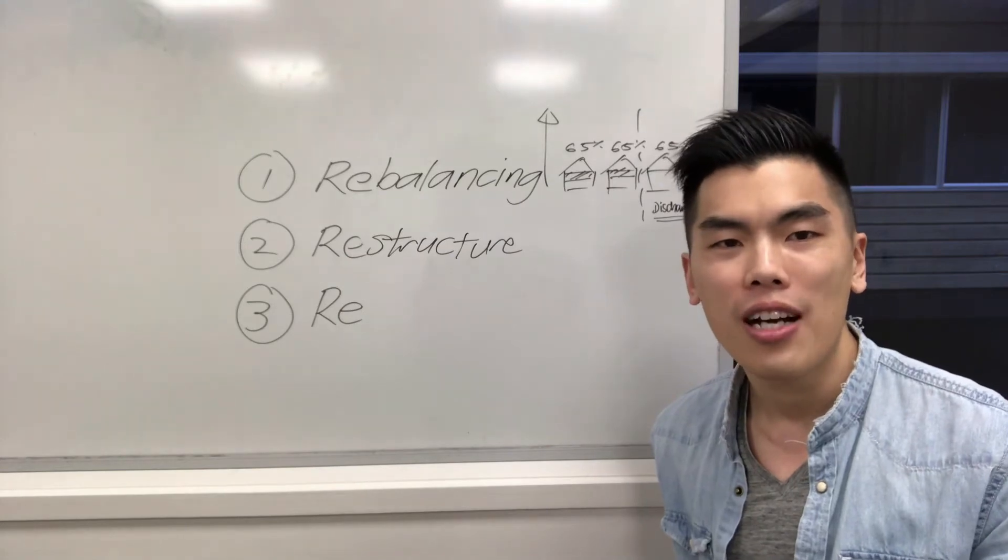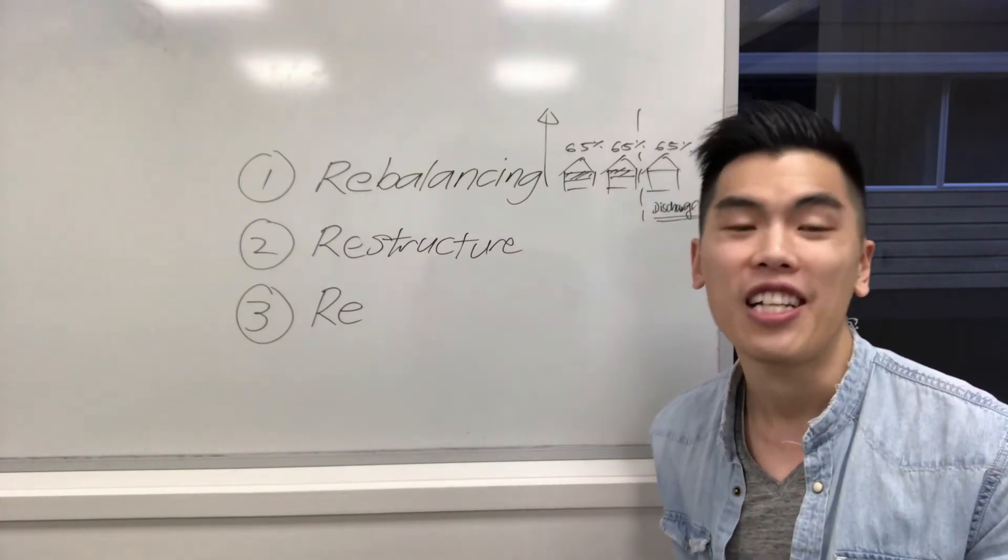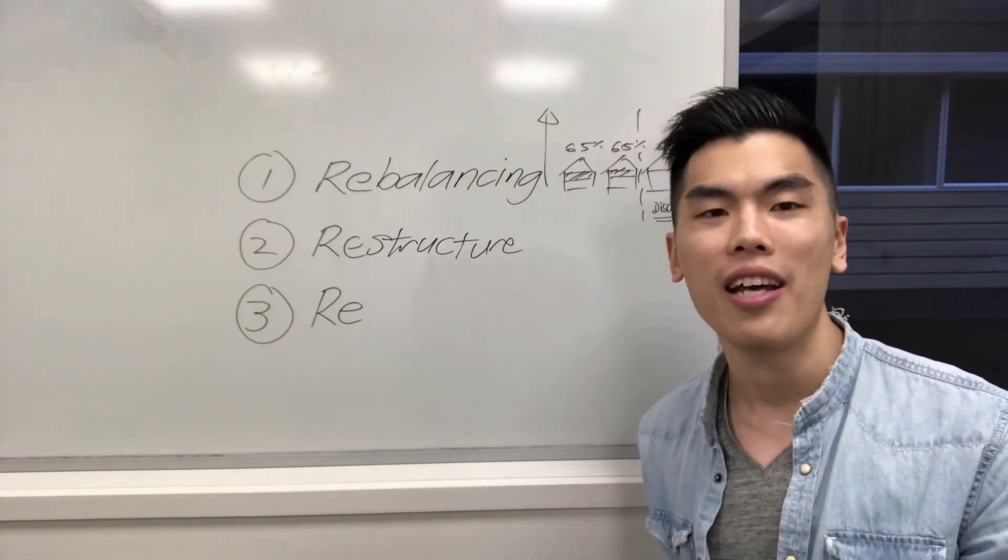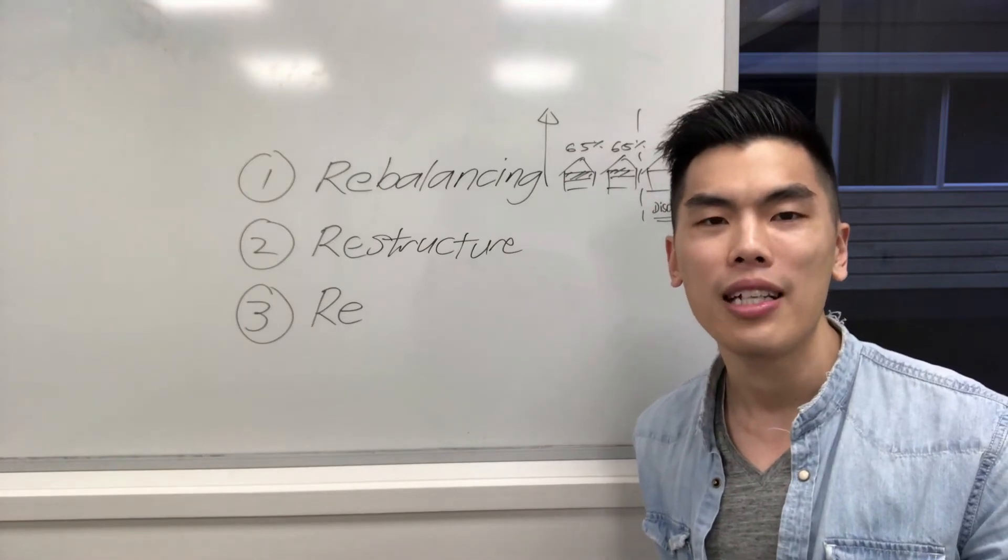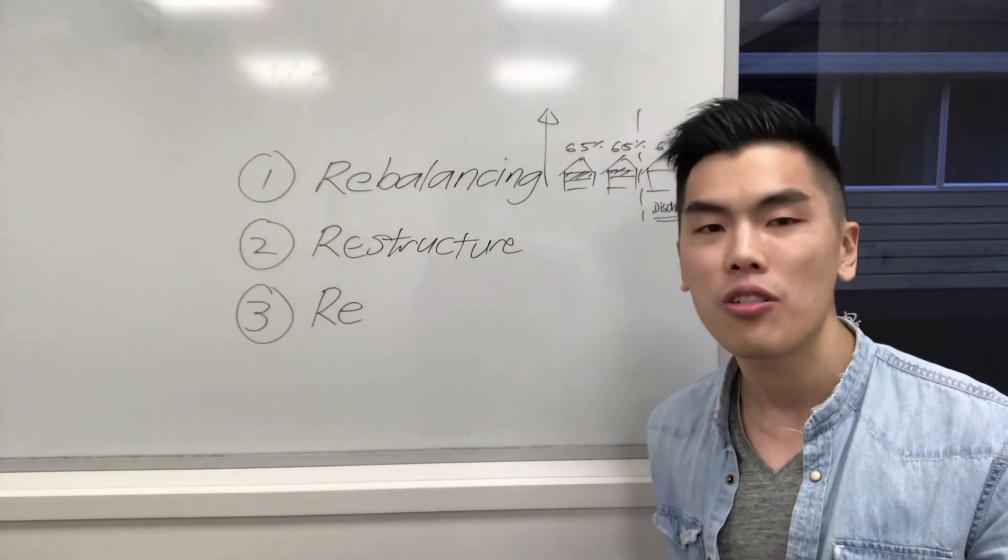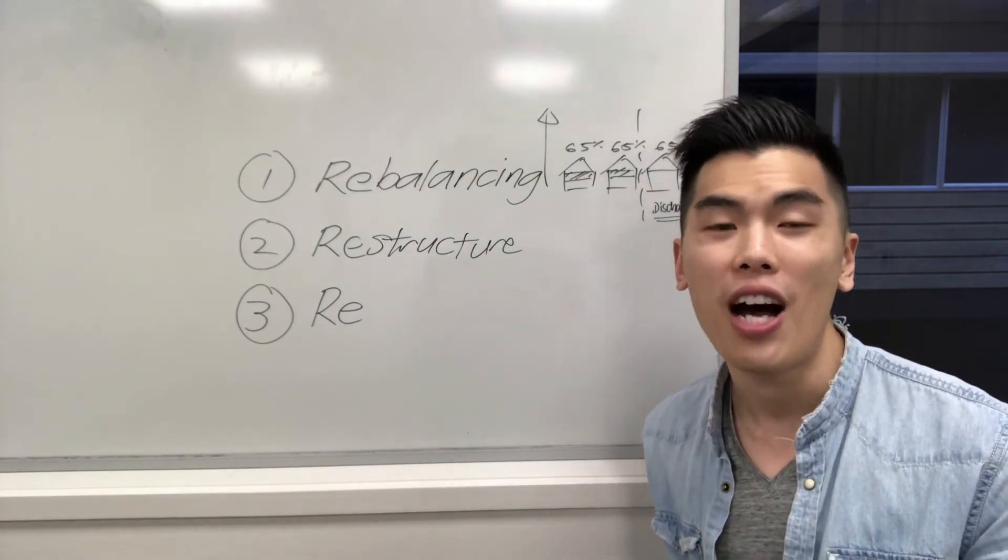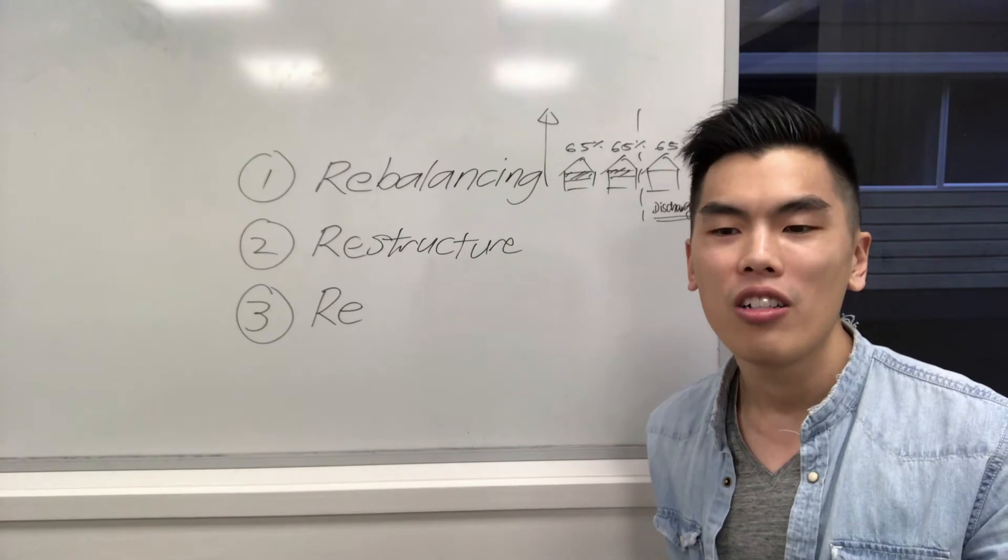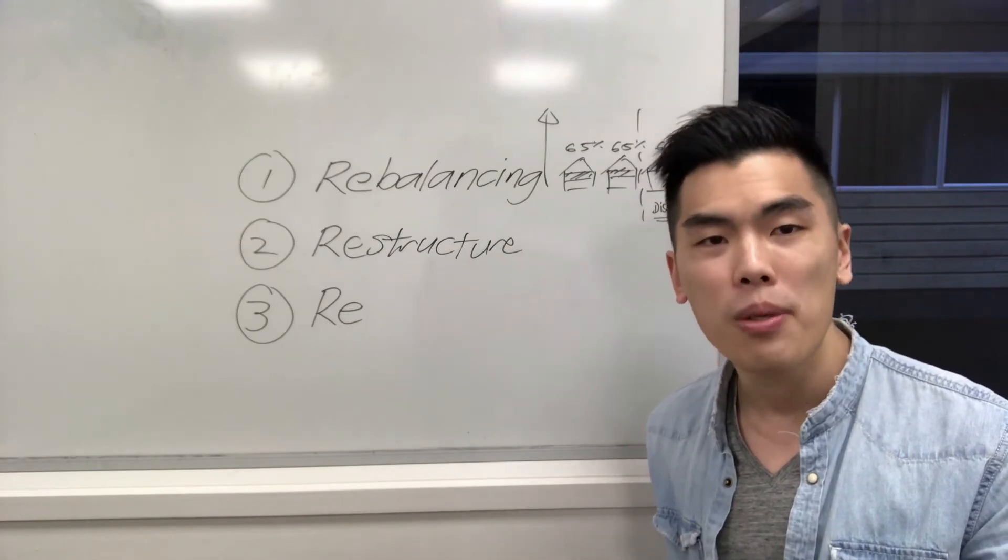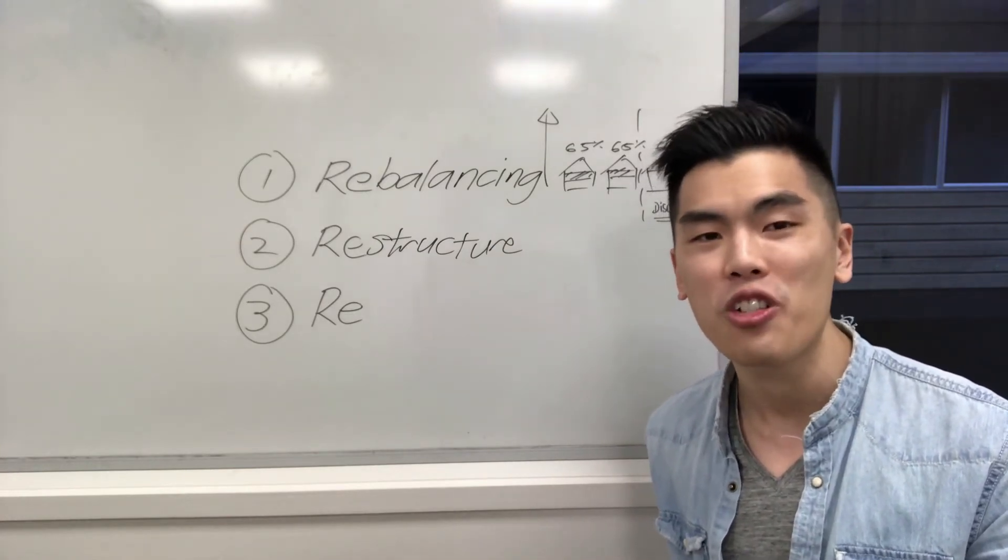The best thing for a client to do is not wait till their interest-only term expires in five years. Seek it out a lot earlier, be proactive. Two to three years down the track, you should be looking at restructuring and finding a new interest-only term that you can negotiate.